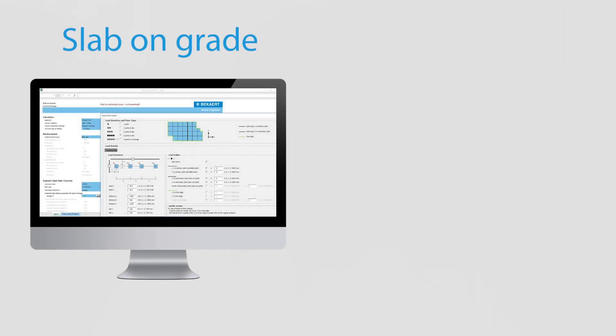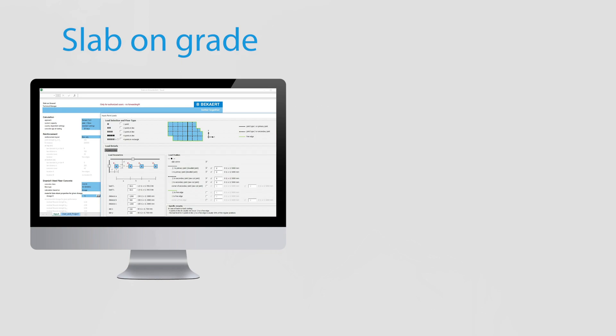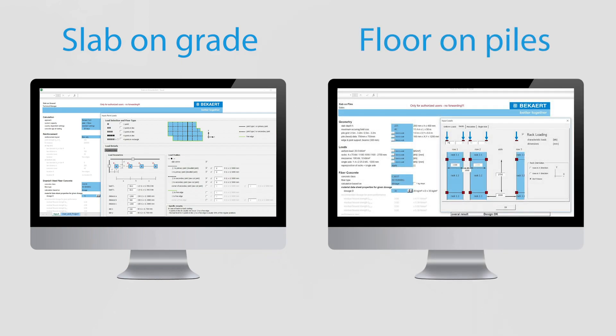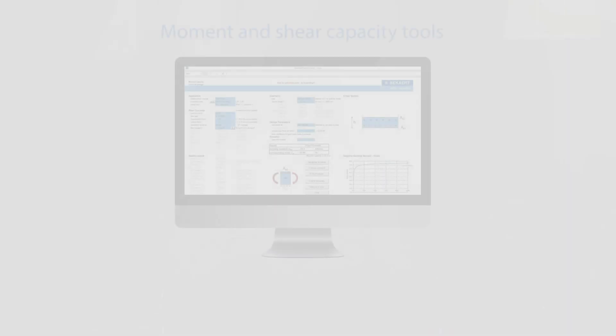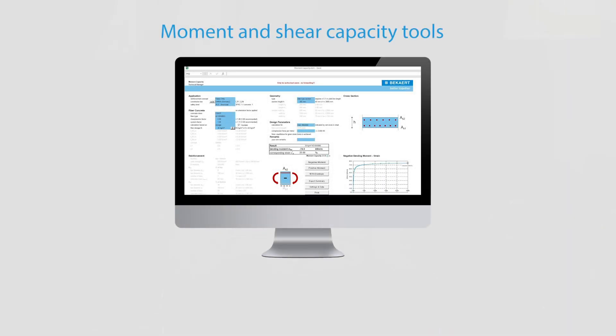Similarly, we have our own in-house slab-on-grade as well as floor-on-piles Excel tools for internal or external industrial slabs that users from around the world may access. Here, you can find a design guideline applicable to your geographical region that you can use to design your slab. For customers dealing with infrastructure projects or buildings, our Excel-based section, moment and shear capacity tools are also accessible for designs.